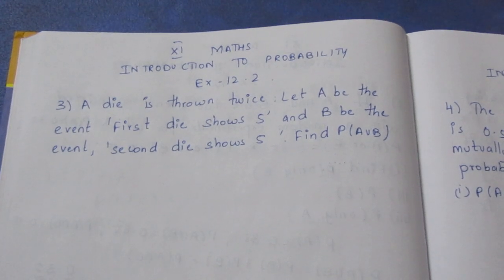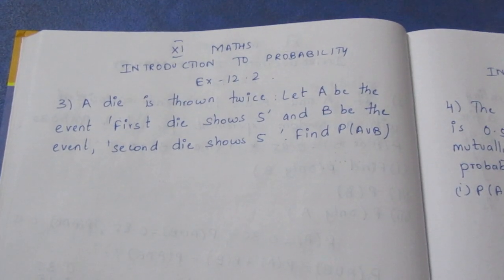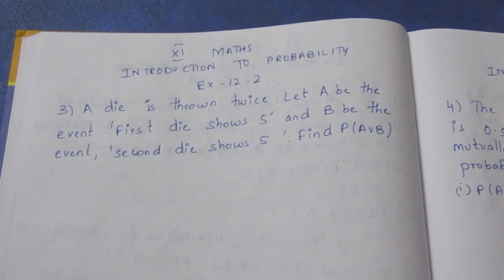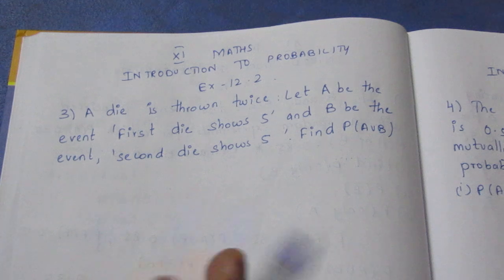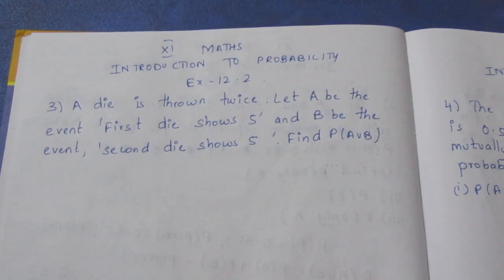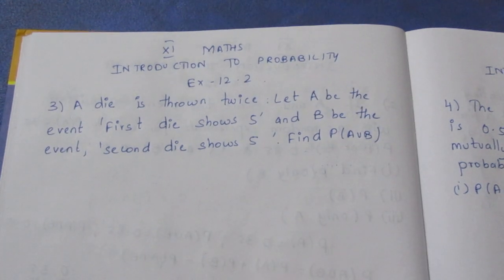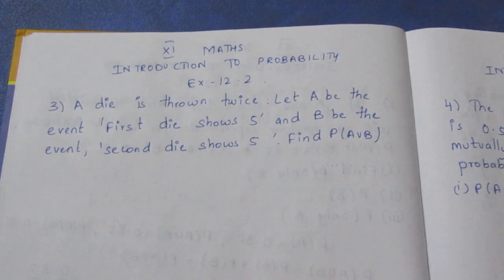Hello viewers, I am Aitli. In the 11th Maths introduction to probability, exercise 12.2, third sum, the question is: a die is thrown twice.